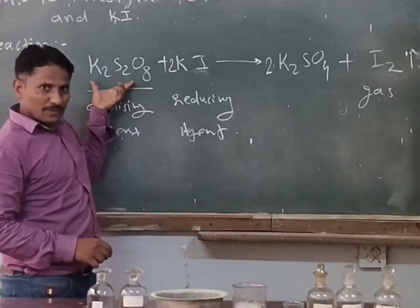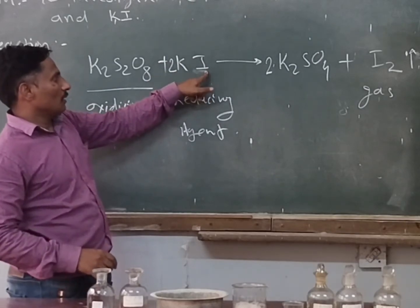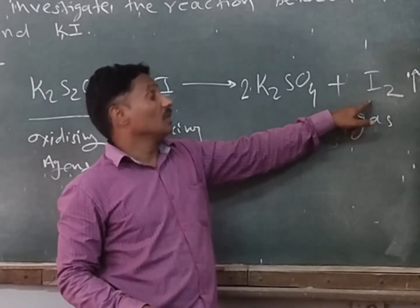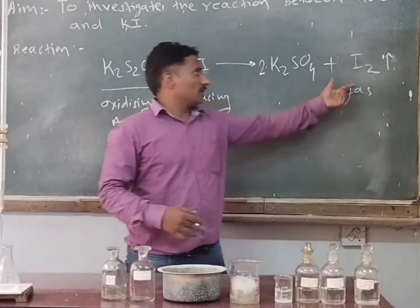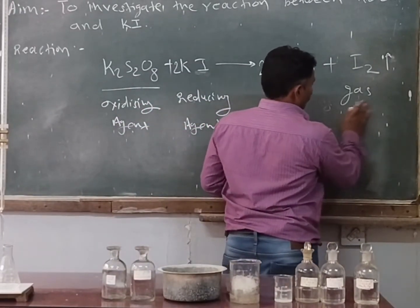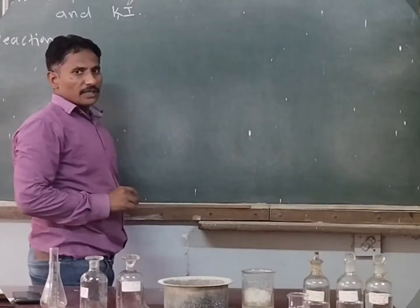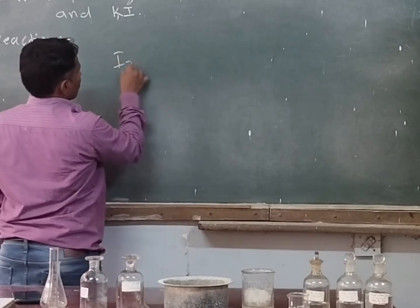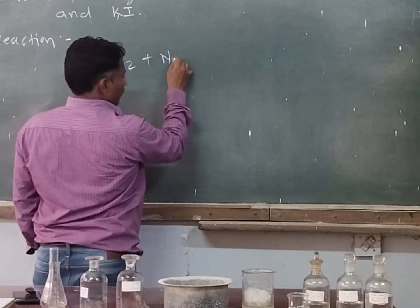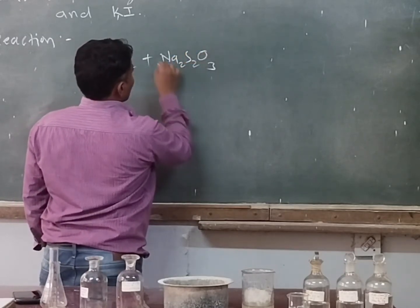The peroxide group is present in persulfate, and the iodine in KI has a minus oxidation state, while the liberated iodine I₂ has zero oxidation state. This liberated iodine is then titrated with sodium thiosulfate: I₂ + 2Na₂S₂O₃ → products.